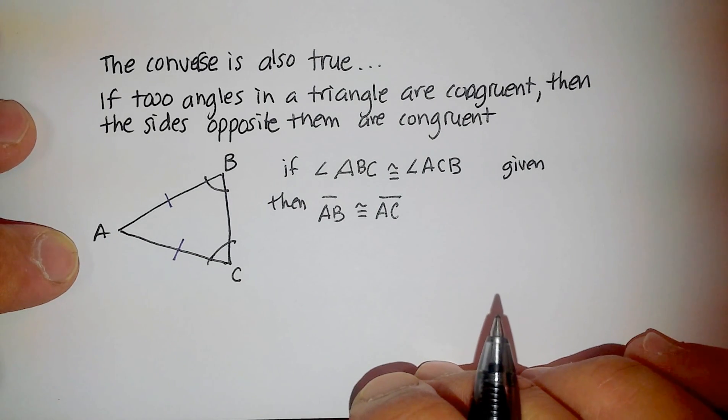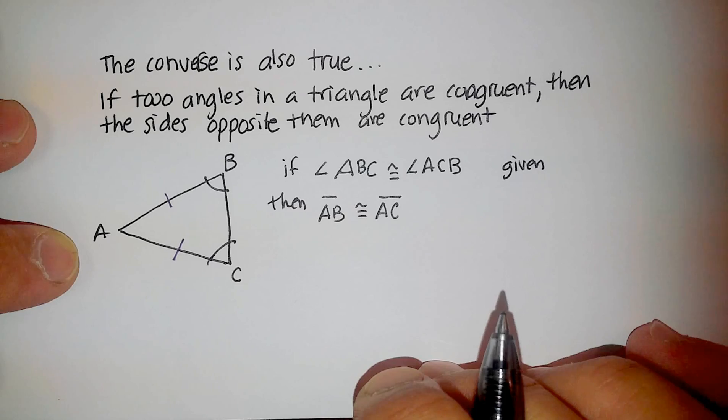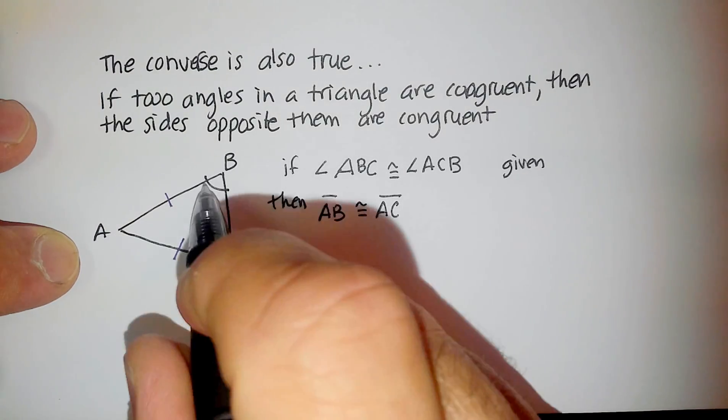So it's just another way of actually proving that triangles can be congruent by knowing some information about their angles.